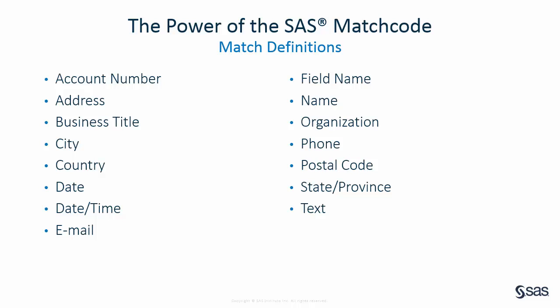The organization match definition ignores words such as 'corporation.' Therefore, ACME Corporation and ACME would generate the same match code using the organization match definition. The logic for these match definitions can also vary by locale — in other words, language and/or country. For example, the logic for matching organization names would be different for English versus Spanish, and the logic for matching addresses would be different for the United States versus the United Kingdom, whereas the logic for matching email addresses would be defined at a global level.